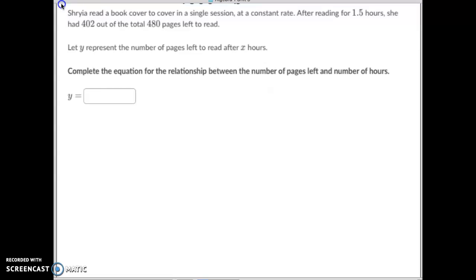Okay, well, let's see. What did they give us here? After one and a half hours, so that would be an x coordinate, she had 402 pages left to read. So there's a coordinate they gave us. And then they told us out of the total, which means the starting point, we started with 480. So they gave us a coordinate point. One and a half hours equals 402 pages left. And they also told us how many pages were in that book to start with, our b, our y intercept, our starting point of 480.